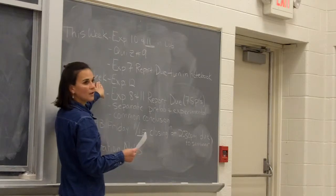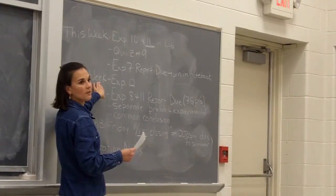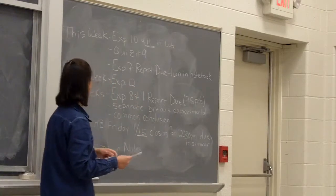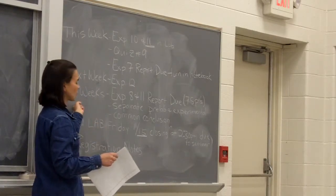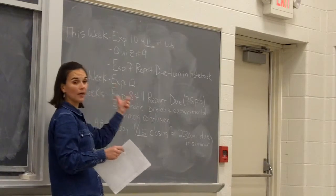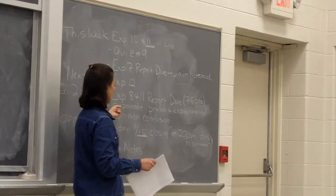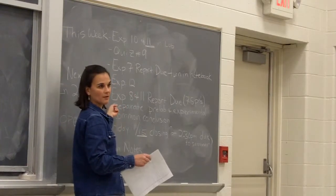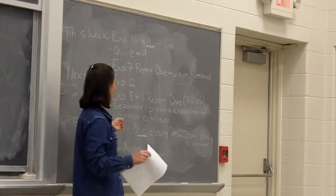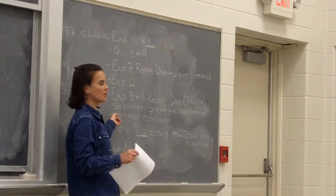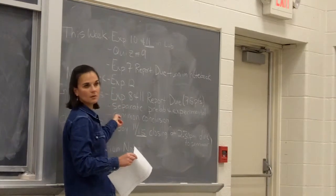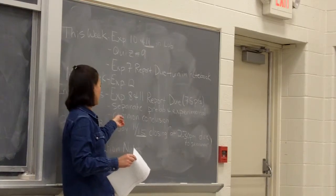Next week we'll be doing experiment 12. On your syllabus it'll say experiment 12 and experiment 13; the doing is experiment 12, so if you work ahead on your pre-lab, that will be the pre-lab for next week. In two weeks, your experiment 8 and 11 report will be due. Because they're related to each other, you're going to hand in one report for both of them. You will have a separate pre-lab and separate experimental for each, but you will write a common conclusion using all the GC data that you collect.